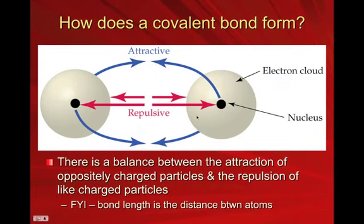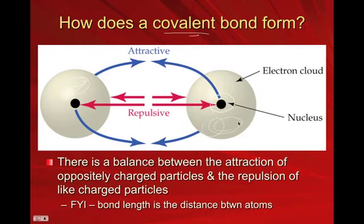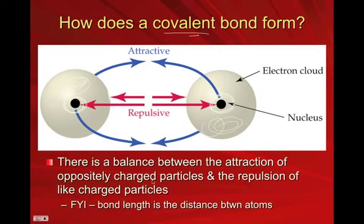Another way of saying the same thing — and this applies to any bond, not just a covalent bond — is that a bond is a balance of attractive and repulsive forces. The attractive forces are between the electron cloud of one atom and the nucleus of the other, and vice versa; opposites attract. The electron clouds repel each other, and the positively charged nuclei repel each other. When you reach the magical balance of attraction and repulsion, that's where you have a bond.